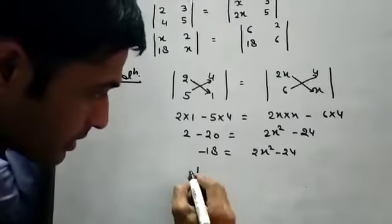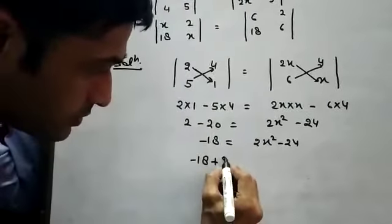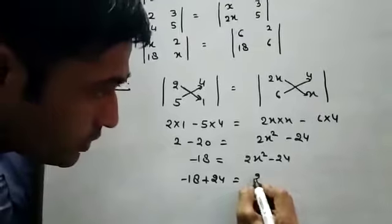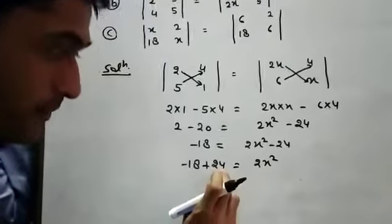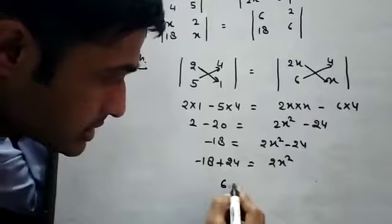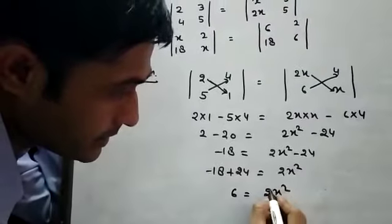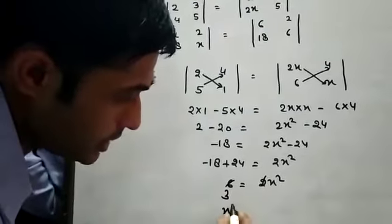2x squared minus 24. Student we transpose to this side. Minus 18 to minus 18 plus 24 equals 2x squared. Here is student, 24 minus 18 is 6.